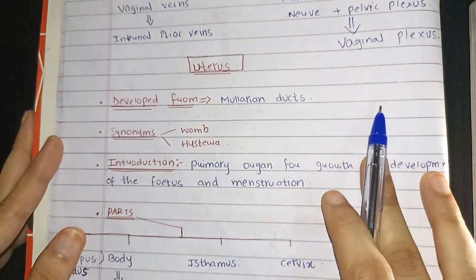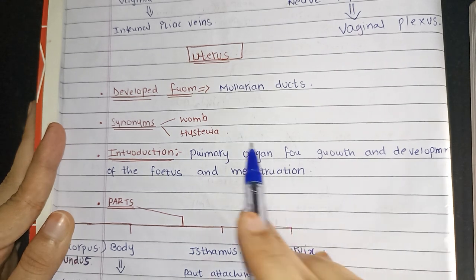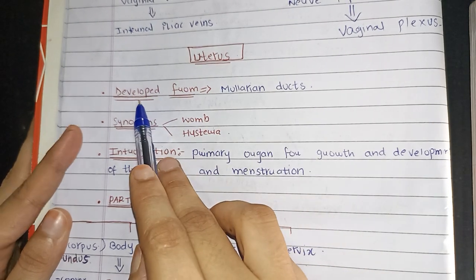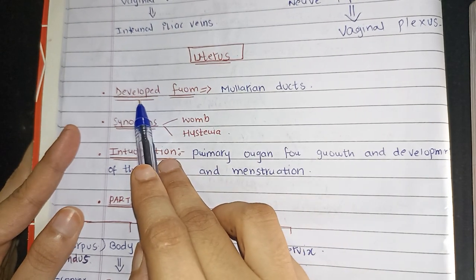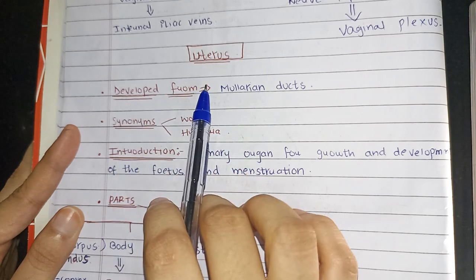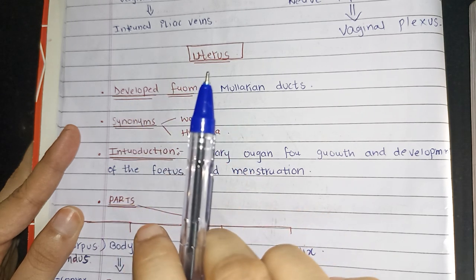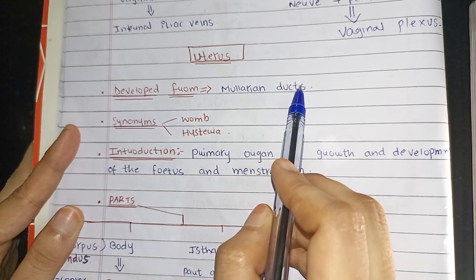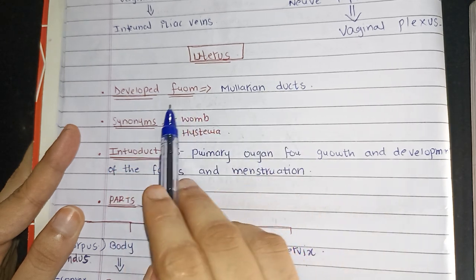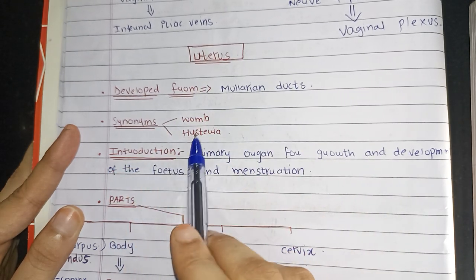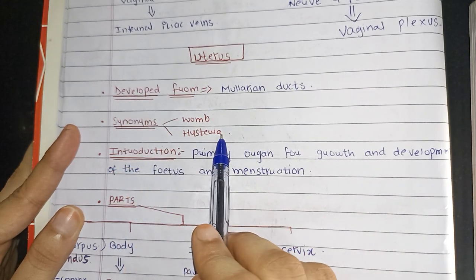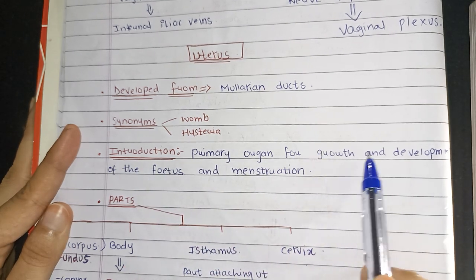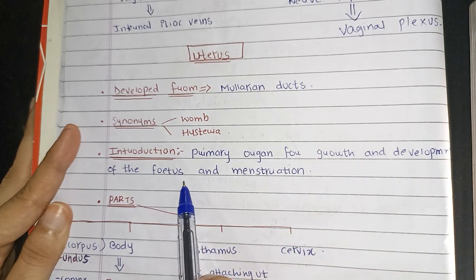Now coming to the next part, that is the uterus. First you have to know how it is developed. The uterus, cervix, vagina upper third — these are developed from the Mullerian ducts. Uterus is also known as womb or hysteria, and it is a primary organ for growth and development of the fetus and for menstruation.